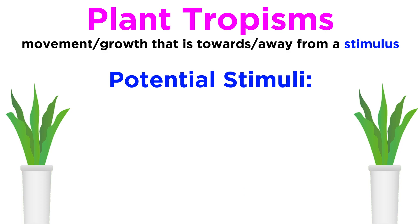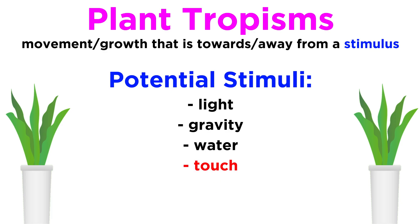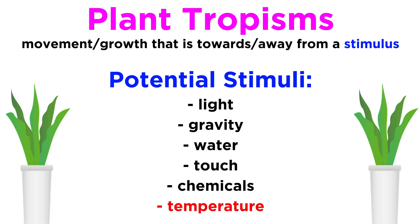The stimuli that plants react to can include light, gravity, water, touch, chemicals, and temperature. Each of these stimuli has its own tropism, and plants can grow with positive or negative tropisms in relation to each of these stimuli, so let's go through them one at a time now.